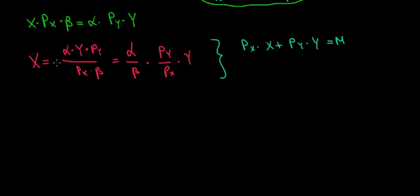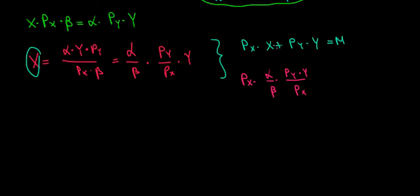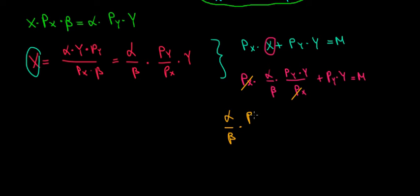Instead of x we're going to substitute what we just found. So that would look like: price of x multiplied with x, which is alpha over beta times price of y times y divided by the price of x, plus the price of y times y equals m. Let's do some simplifications — price of x cancels out, so we have alpha divided by beta times price of y multiplied with y, plus price of y times y equals m.